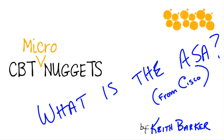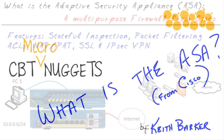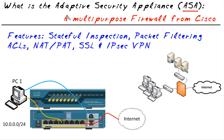What is the ASA? We're going to spend a few minutes identifying what exactly is an Adaptive Security Appliance and point out some of its important features. An ASA stands for Adaptive Security Appliance and it's a multi-purpose firewall from Cisco.